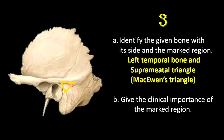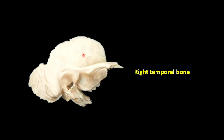To identify this as the left temporal bone: the thin plate-like squamous part lies upwards, the zygomatic process faces anteriorly, the external auditory meatus is on the lateral aspect, and posteriorly you have the mastoid process. For the right temporal bone, the orientation is similar but mirrored — that's how you identify the side of the temporal bone.